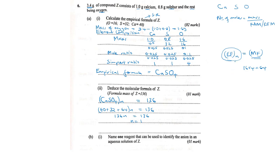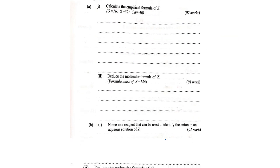Since n = 1, the empirical formula is the same as the molecular formula. The molecular formula of Z is CaSO₄ — calcium sulfate. That is one mark. Next, they ask us to name one reagent, which we will look at on the next slide.